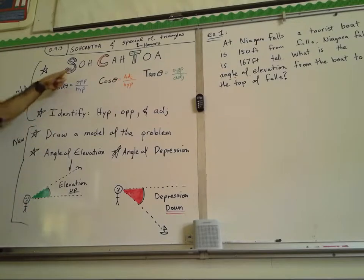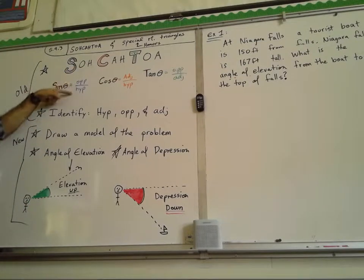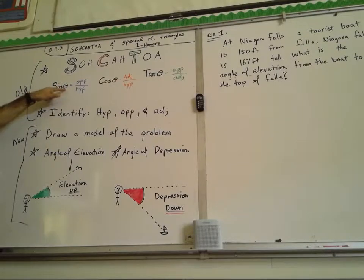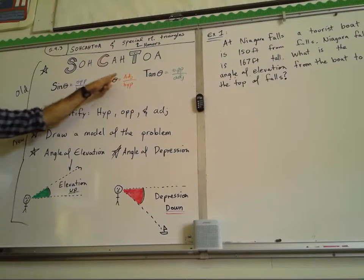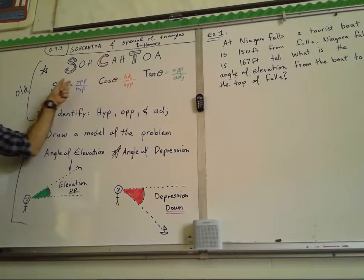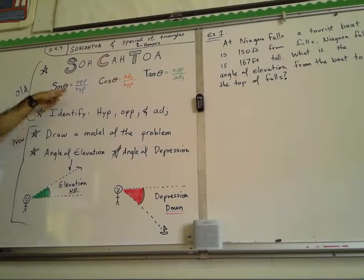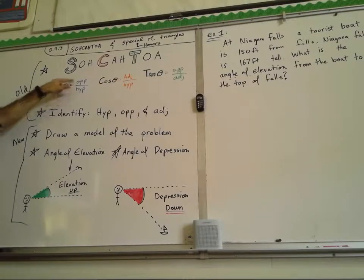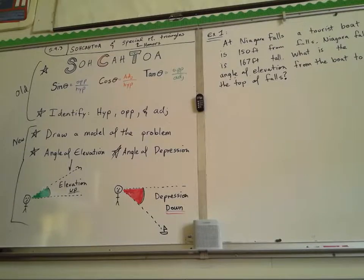It also gives you the order of what goes on top and bottom of the fractions. So the sine of some theta tells you, based on the theta, which is opposite and which is hypotenuse. Based on the theta reference point, you find the opposite side and hypotenuse in this ratio, and that equals the sine of that angle. We've already been doing some of this practice — identify hypotenuse, opposite, and adjacent. That's the first step always.